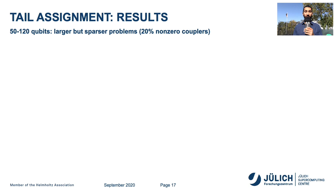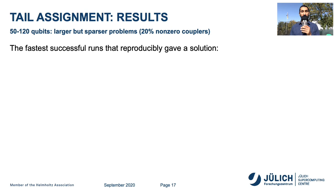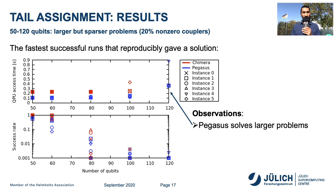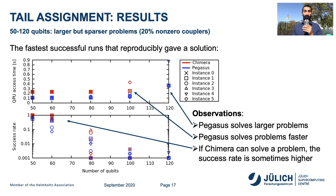Next, we implement 50 to 120 qubit problems which are larger but sparse, with around 20% non-zero couplers. We show results for the fastest successful runs that could reproducibly give a solution. On the top plot, the y-axis shows QPU access time in seconds and the x-axis shows the number of qubits; the bottom plot shows the success rate for Chimera in red and Pegasus in blue, across six different instances. The observations are that Pegasus solves larger problems and solves problems faster. If Chimera can solve a problem, the success rate is sometimes higher.